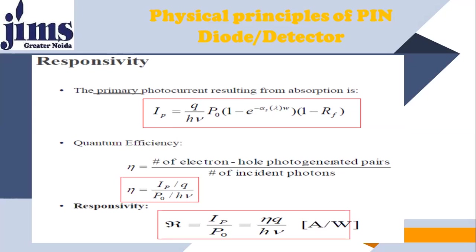Photons are absorbed and because of that absorption they transfer their energy to electrons, electrons become free and create a current called photocurrent. As far as quantum efficiency is concerned, the concept is: how many photons are incident and how many free electrons or holes are generated? For example, it may be possible that 100 photons are incident on the intrinsic layer and 60 electrons become free.